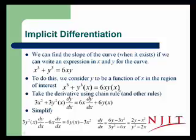6x times the derivative of y(x) plus y(x) times the derivative of 6x, which is just 6. So we get 3x² + 3y²·dy/dx = 6x·dy/dx + 6y(x).